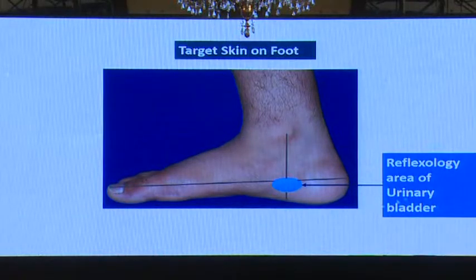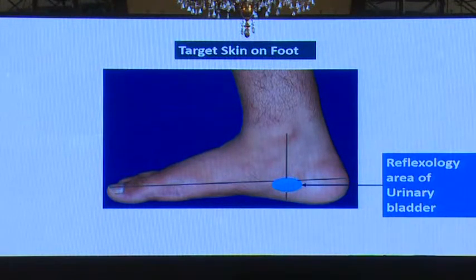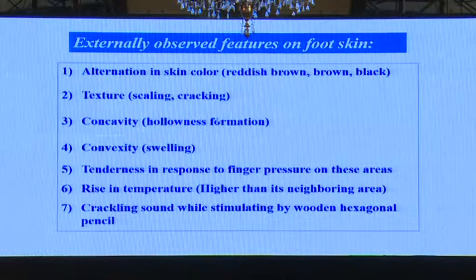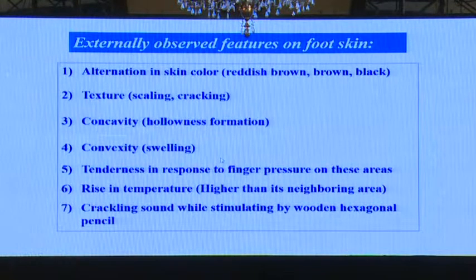An example: this oval-shaped area is the reflexology area which carries information regarding the urinary bladder. When the urinary bladder becomes dysfunctional, different colors are observed on this area — reddish brown, brown, and black. The texture also changes: concavity appears, tenderness occurs if pressed by finger, and there is a local rise in temperature. Sometimes a crackling sound is also observed.